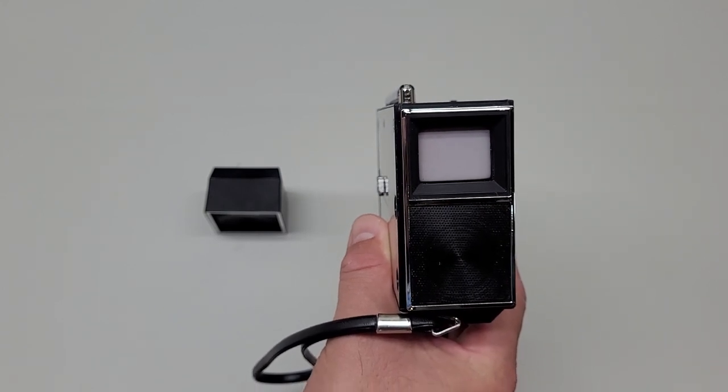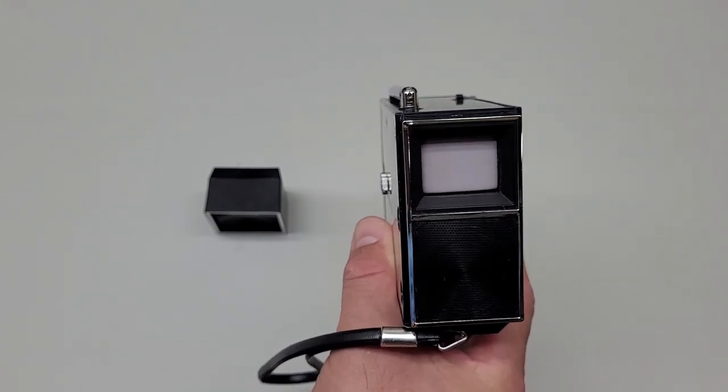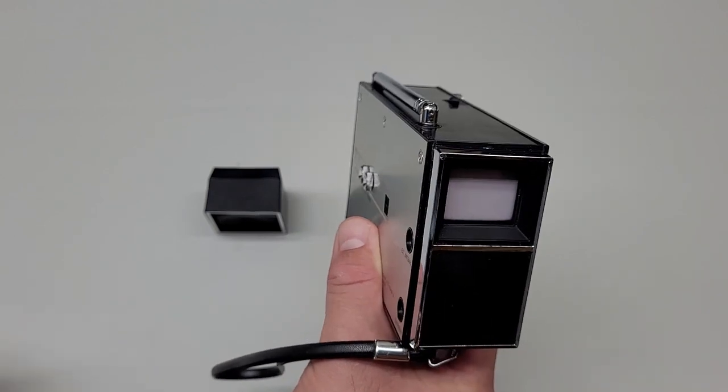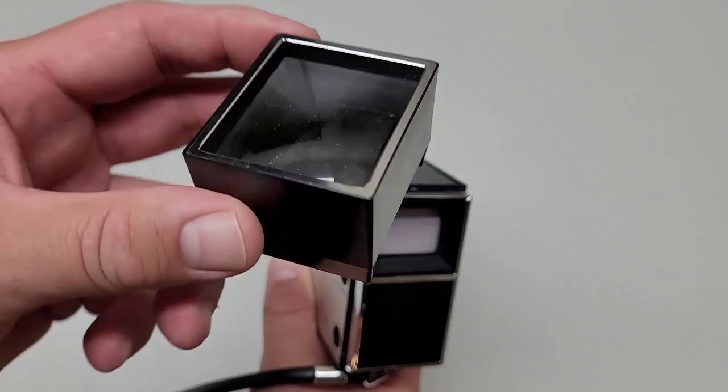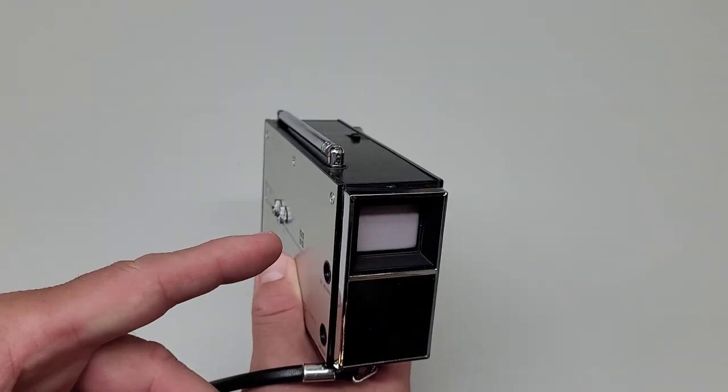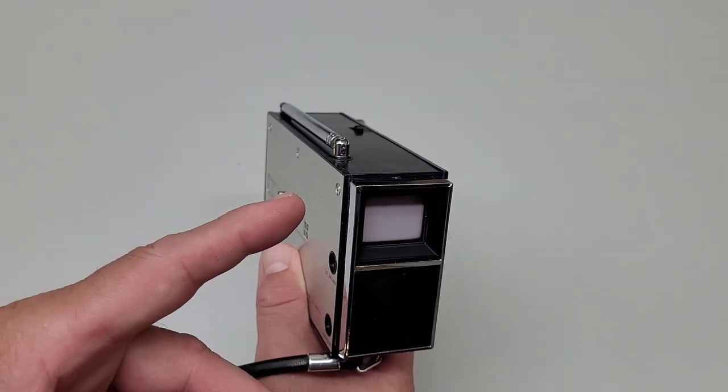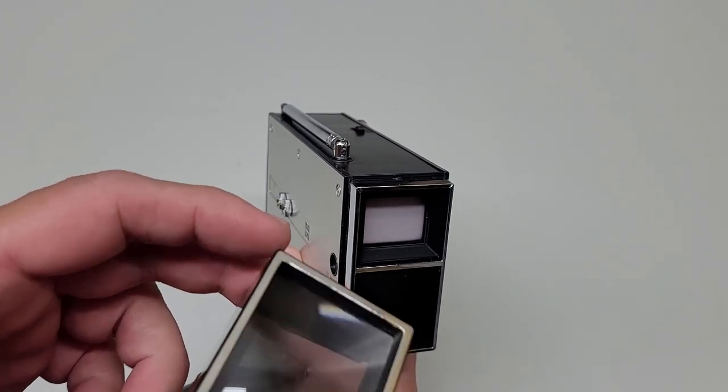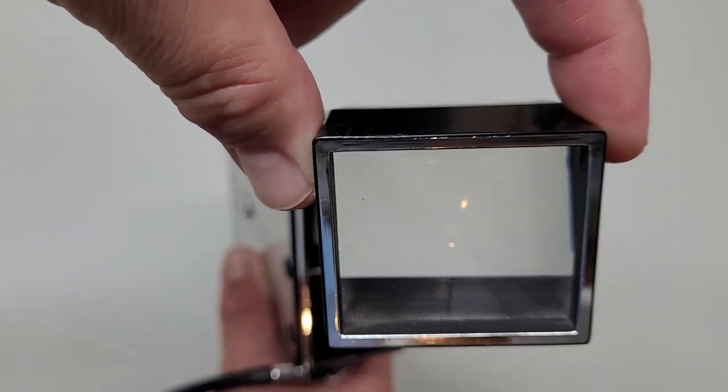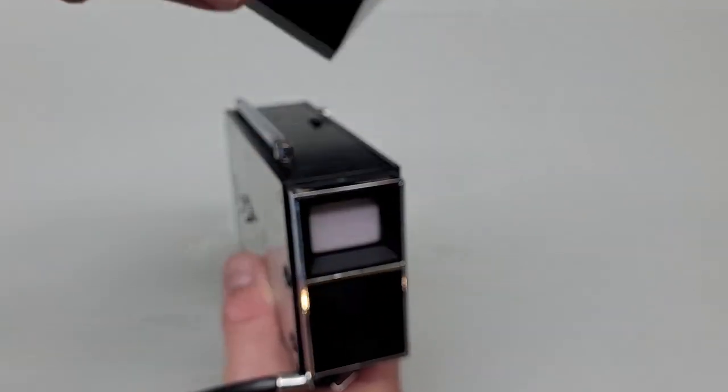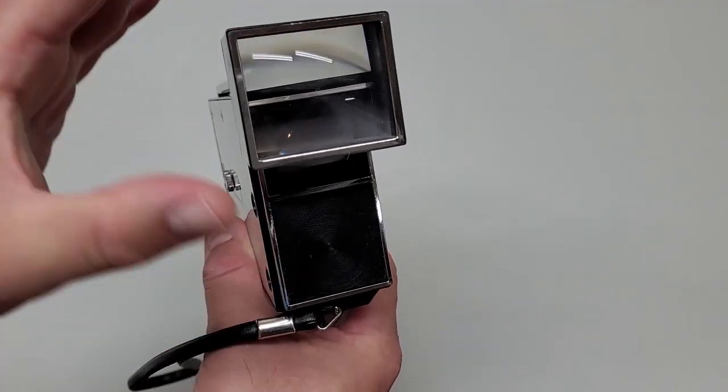There we go. And then that is the one and a quarter inch by one and a quarter inch television screen. That is the smallest television screen in the world. The magnifier increases it from one and a quarter by one and a quarter to two inches by one and three quarters, so it does provide some enlargement for viewing.